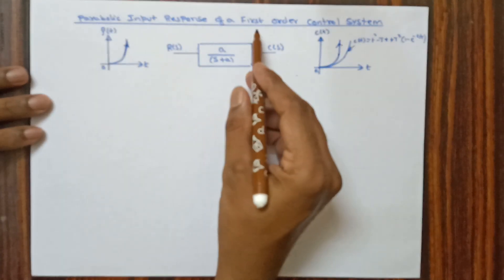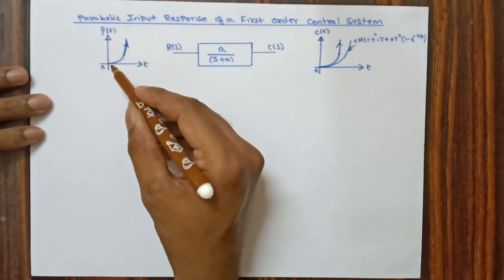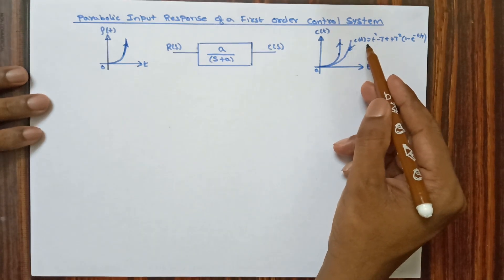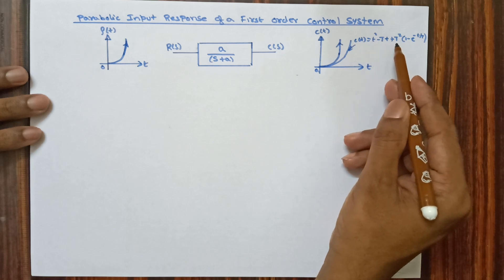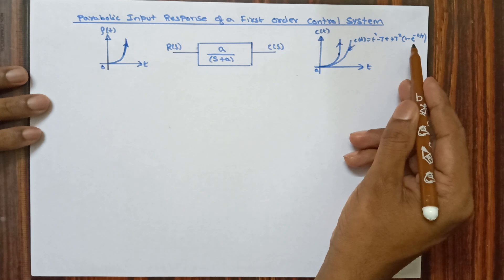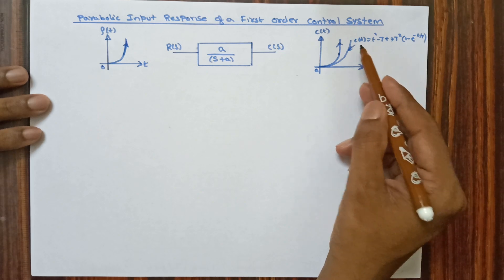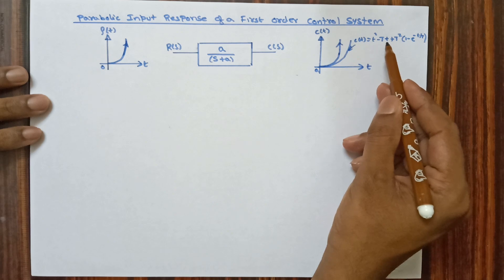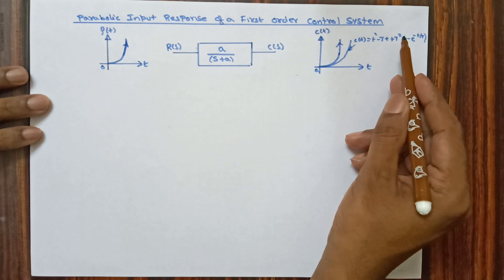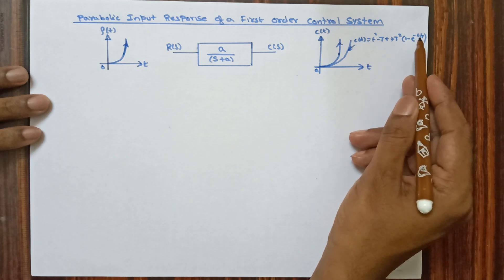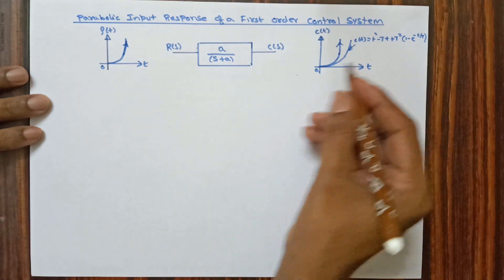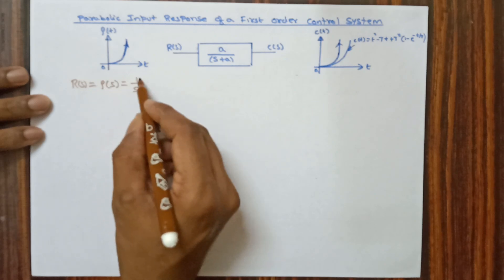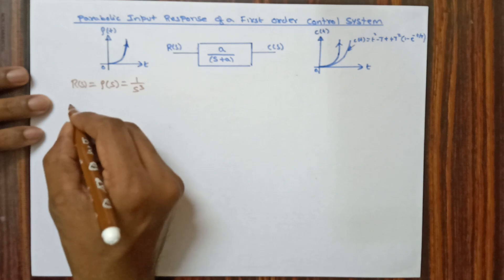Next, parabolic input response of a first order control system. The parabolic input is applied to the first order system and the response we are getting has the output c(t) = t² - T·t + T²·(1 - e^(-t/T)). The reference signal for parabolic input in Laplace form is R(s) = 1/s³.